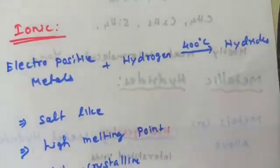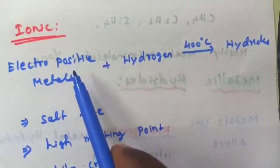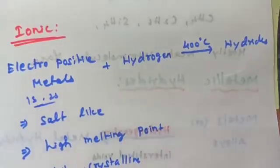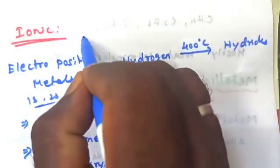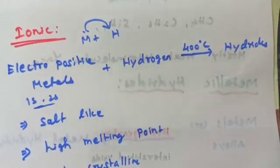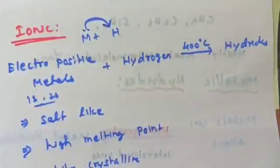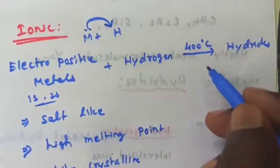Ionic hydrides are hydrides composed of electropositive metals — generally alkali metals, the 1s and 2s block elements. Except beryllium and magnesium, all alkali and alkaline earth metals form ionic hydrides. In ionic hydrides, electron transfer occurs from the metal to the hydrogen atom. They can be prepared by reaction of the elements at about 400 degrees Celsius.